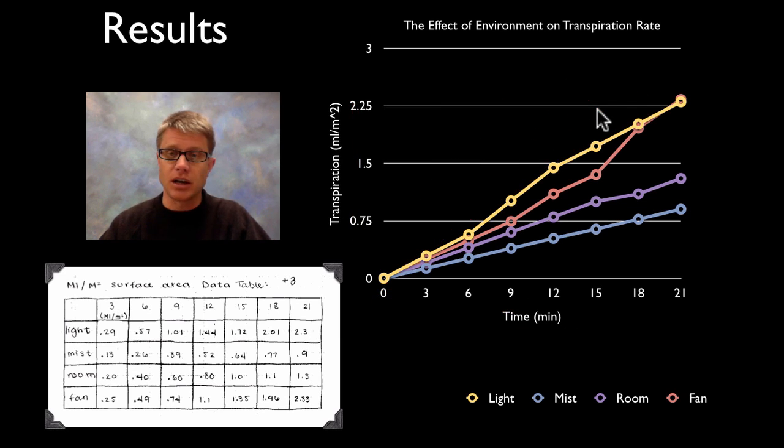Let me clear all my scribbling out of the way. Which of these is going to be the fastest? Well the light is going to be the fastest, followed by the fan, followed by the room, followed by mist. And that's hopefully what you were thinking.